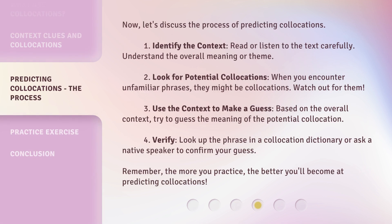Now, let's discuss the process of predicting collocations. First, identify the context: read or listen to the text carefully and understand the overall meaning or theme. Second, look for potential collocations — when you encounter unfamiliar phrases, they might be collocations, so watch out for them. Third, use the context to make a guess based on the overall context. Fourth, verify by looking up the phrase in a collocation dictionary or asking a native speaker to confirm your guess. Remember, the more you practice, the better you'll become at predicting collocations.